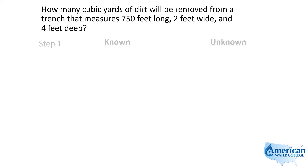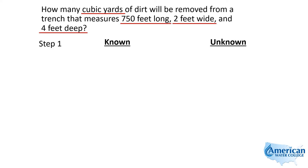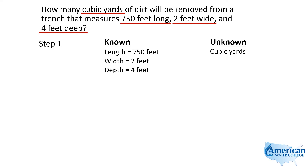We're going to use our five-step approach to solve this. Step one has us pulling out the information that they gave us in the problem. So what did they tell us? We're looking for cubic yards of dirt, and it's 750 feet long, 2 feet wide, and 4 feet deep. So let's write all that down — we're looking for cubic yards, and our length, width, and depth are 750 feet, 2 feet, and 4 feet. That's step one.